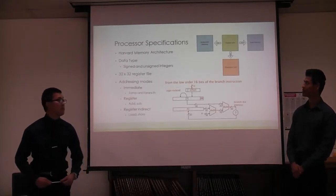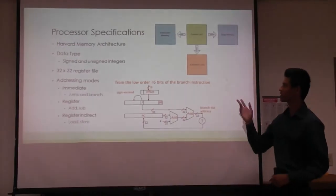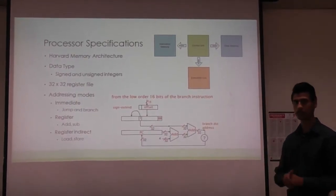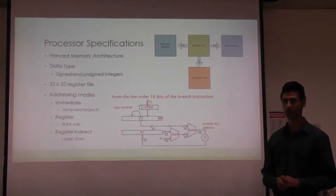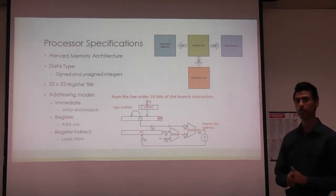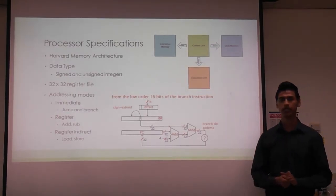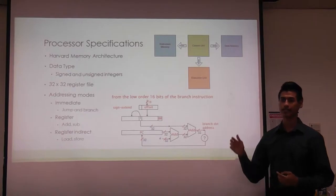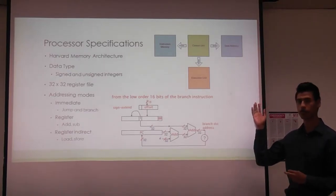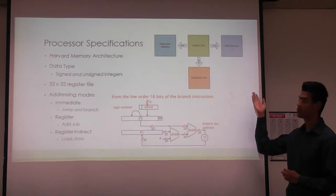The processor specifications consist of a Harvard architecture, which means we have two different memory modules — one for instructions and one for data memory. The benefit of this is that we can access instructions and simultaneously read or write from the data memory.